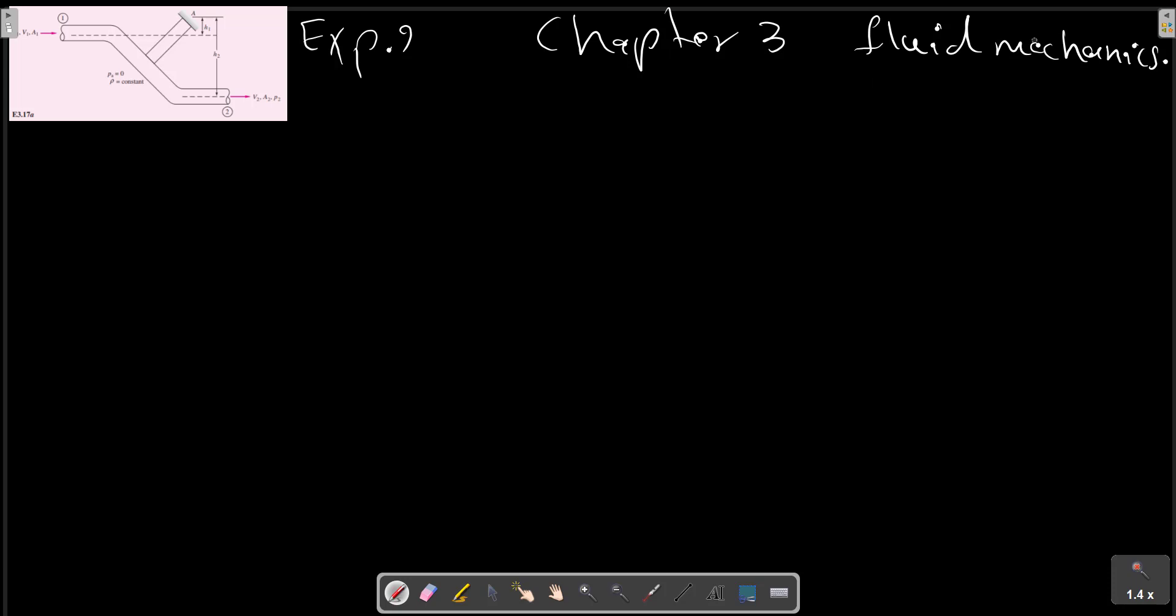The flow is incompressible with ambient pressure P_R equals to 0. Find an expression for the torque T that must be resisted by the support at A.